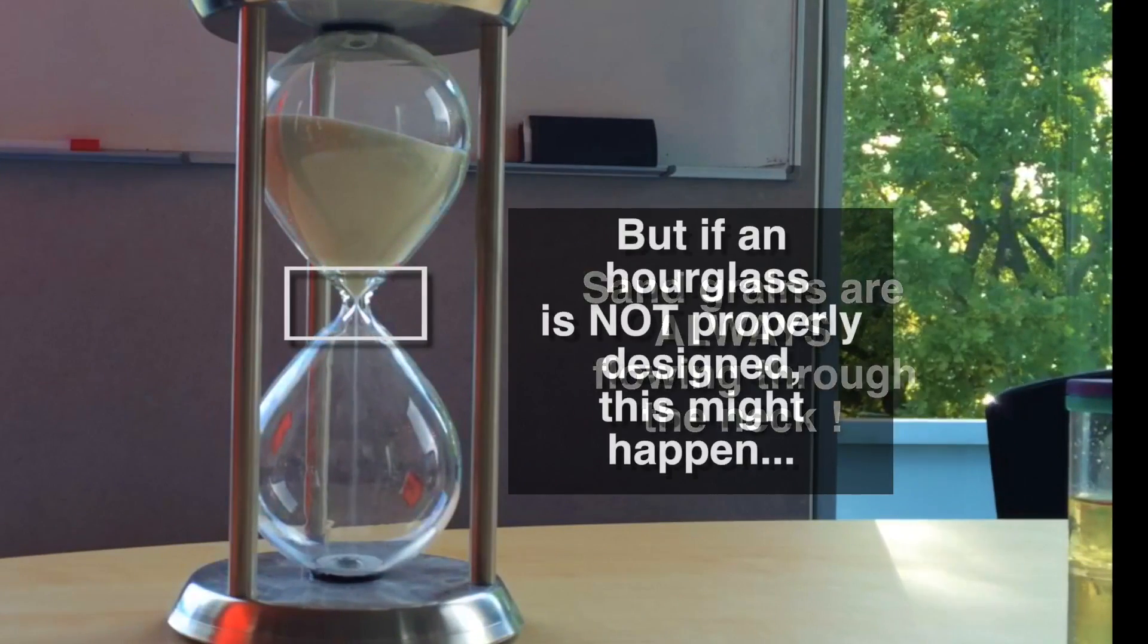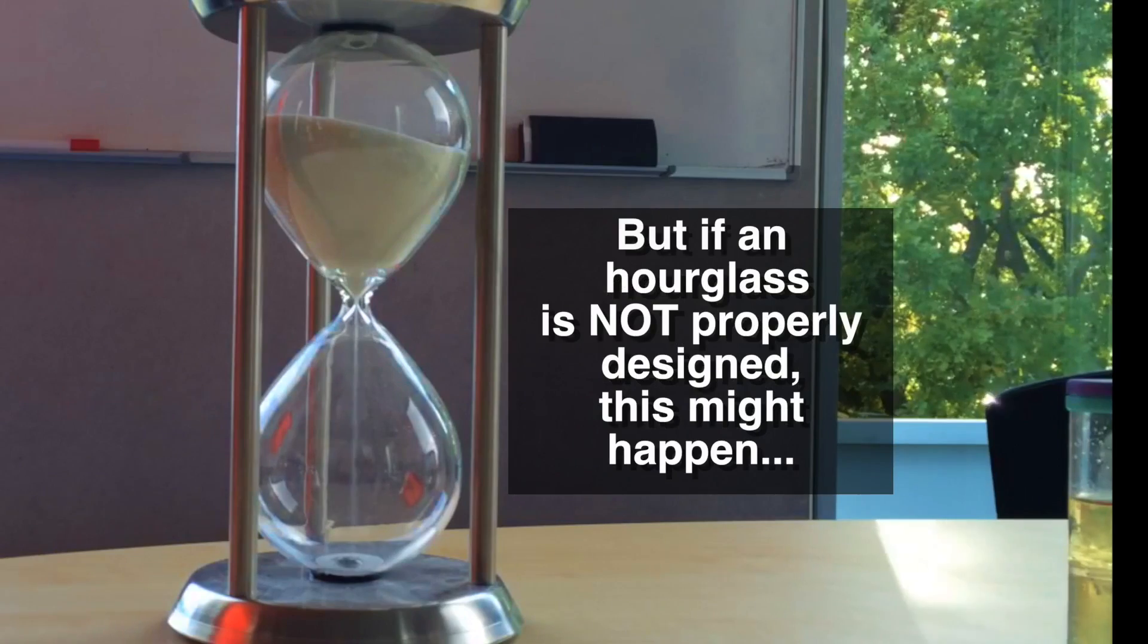But actually, sometimes hourglasses might not work correctly. Why's that? In this experiment, you can see what happens. At some point, several particles form an arc and they block the neck, preventing the other particles to get out.